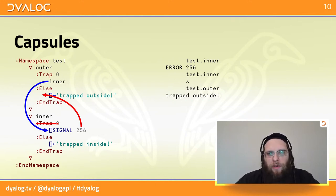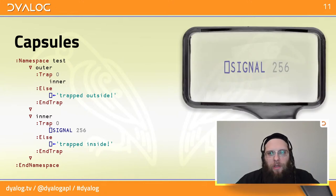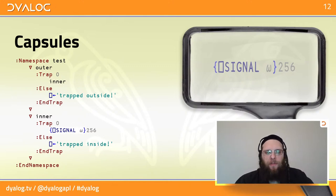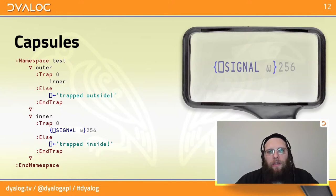How can we prevent this behavior? If we take the QuadSignal function and wrap it in a little dfn, then a dfn that appears inside a tradfn is itself a capsule. QuadSignal will now leave this tiny inner capsule — and having done its job of leaving one capsule — the trap in the inner function does have an effect.